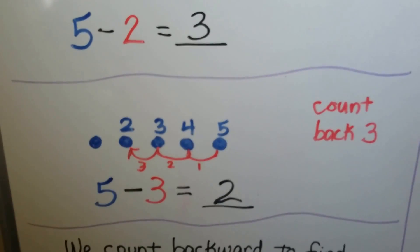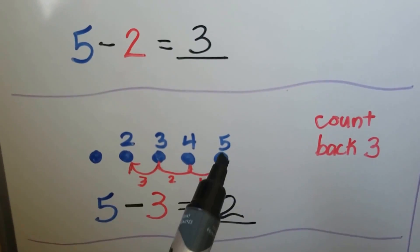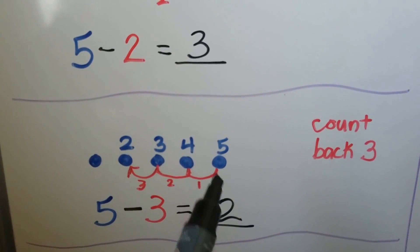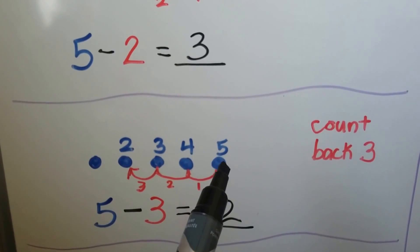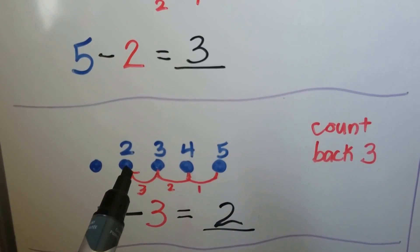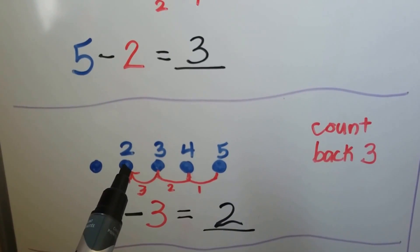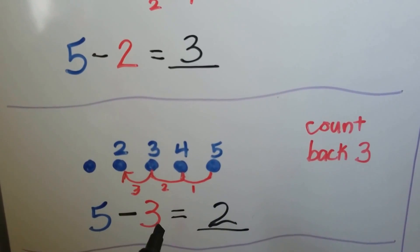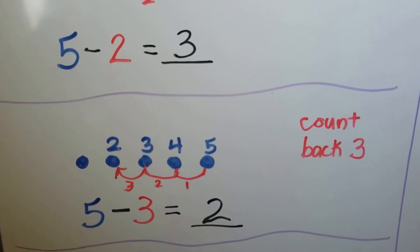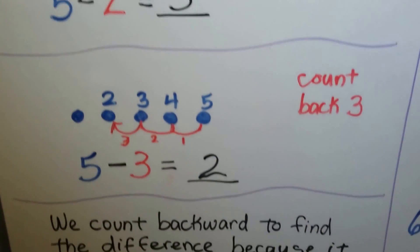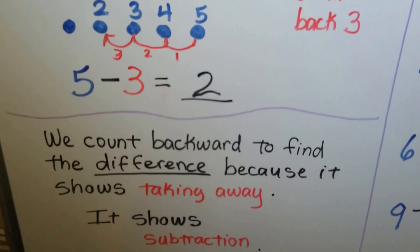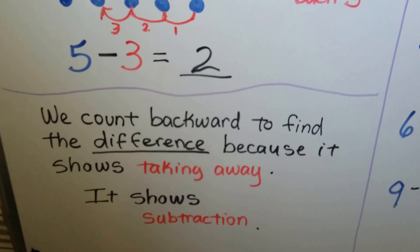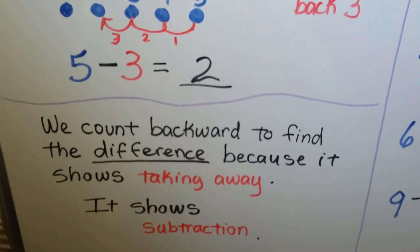We can count back 3. We have five counters. We want to take away 3. We count back 1, 2, 3, and that brings us to 2. 5 minus 3 is equal to 2. We count backward to find the difference because it shows taking away — it shows subtraction.